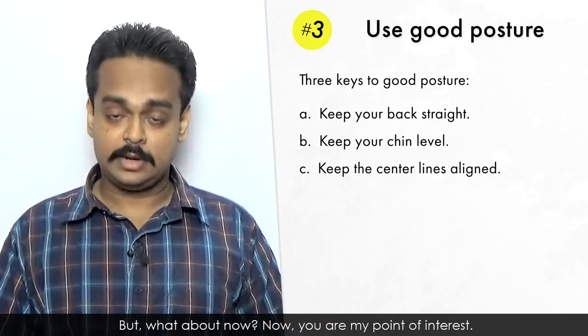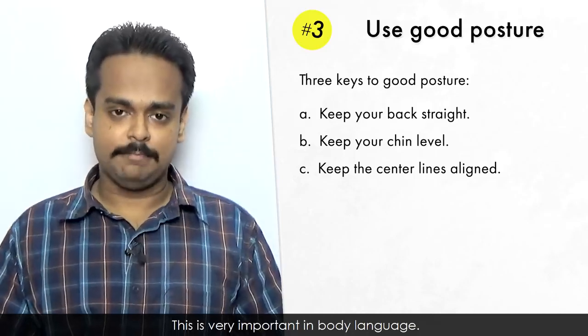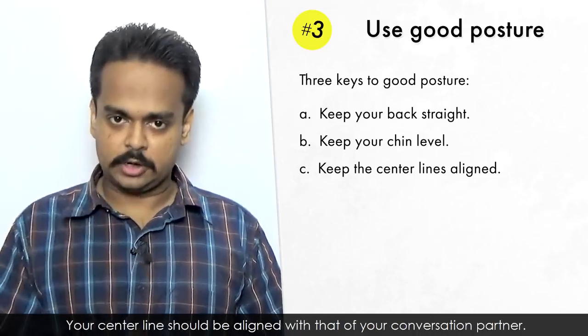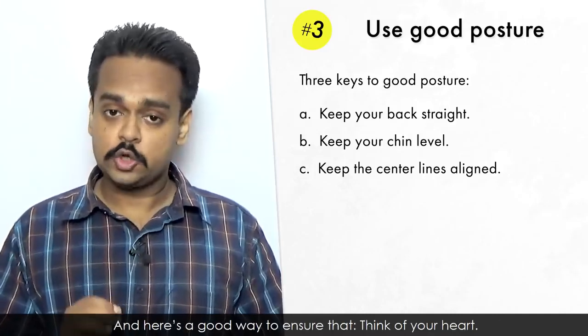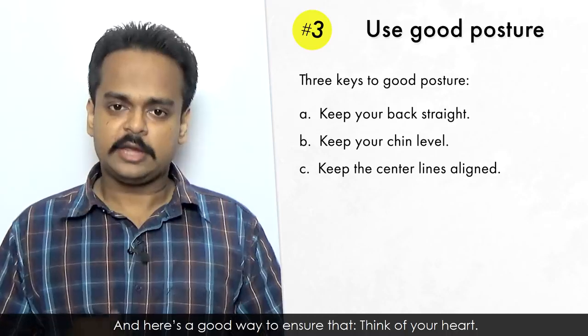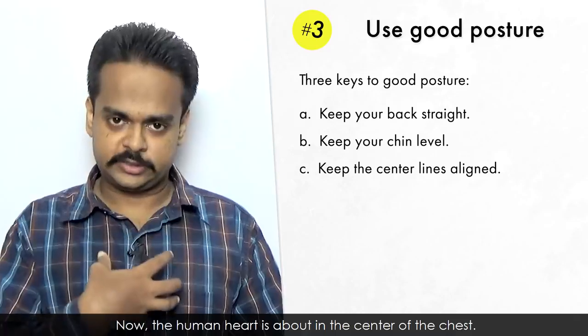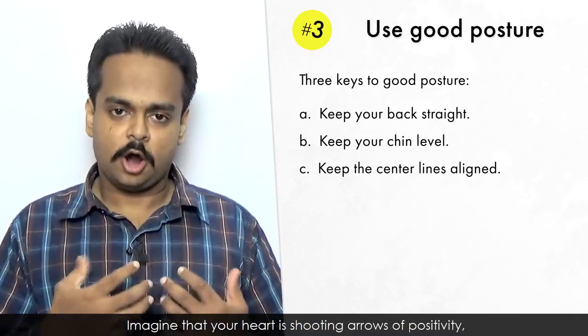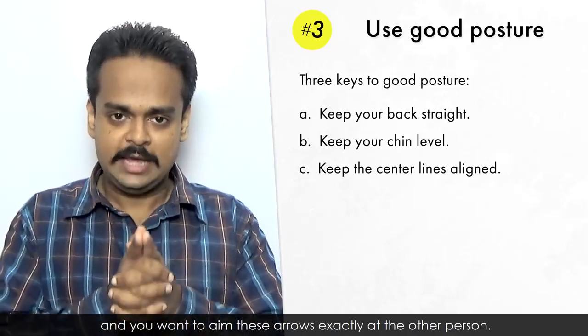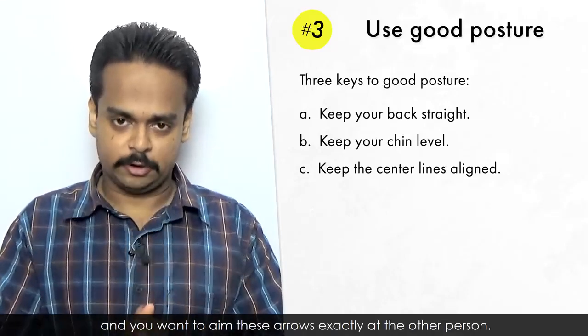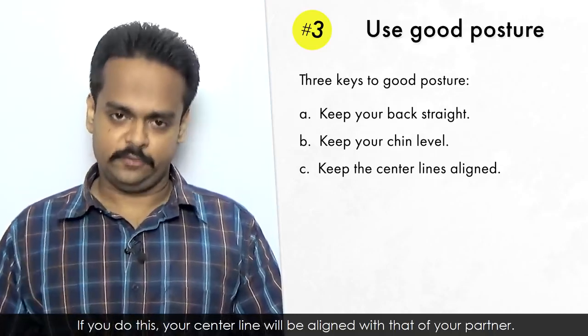But what about now? Now you are my point of interest. This is very important in body language. Your center line should be aligned with that of your conversation partner. And here's a good way to ensure that. Think of your heart. Now the human heart is about in the center of the chest. Imagine that your heart is shooting arrows of positivity, and you want to aim these arrows exactly at the other person. If you do this, your center line will be aligned with that of your partner.